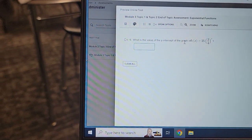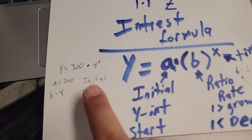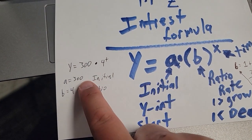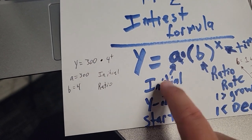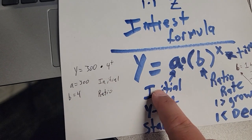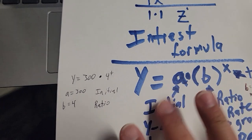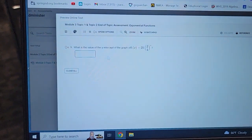Next: what is the value of the y-intercept? Going back to the formula — the y-intercept is the a number, the initial value. On my example I'd say 300 is the y-intercept because it's the a number — it's the initial, and it's also the y-intercept. Look at your problem and identify which number is the y-intercept.